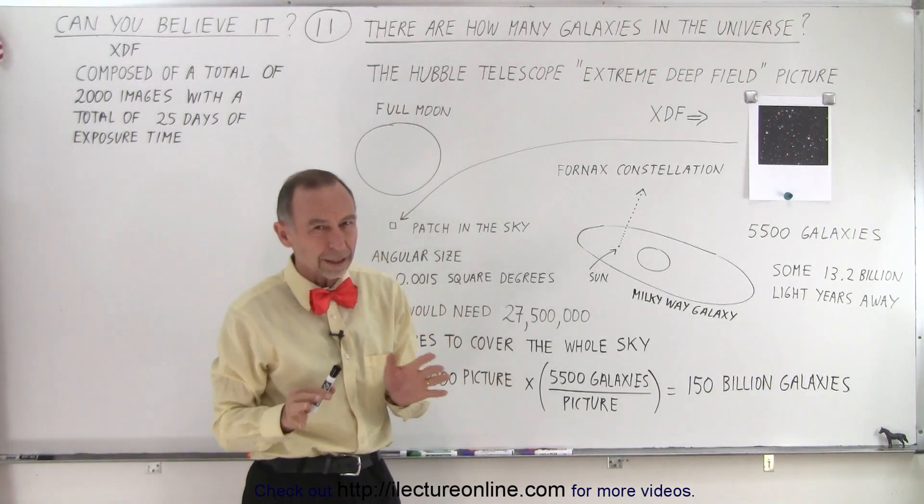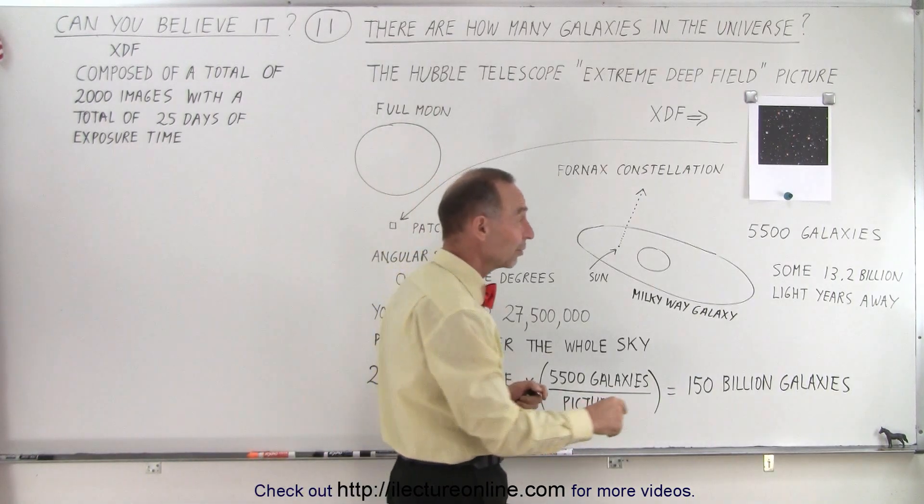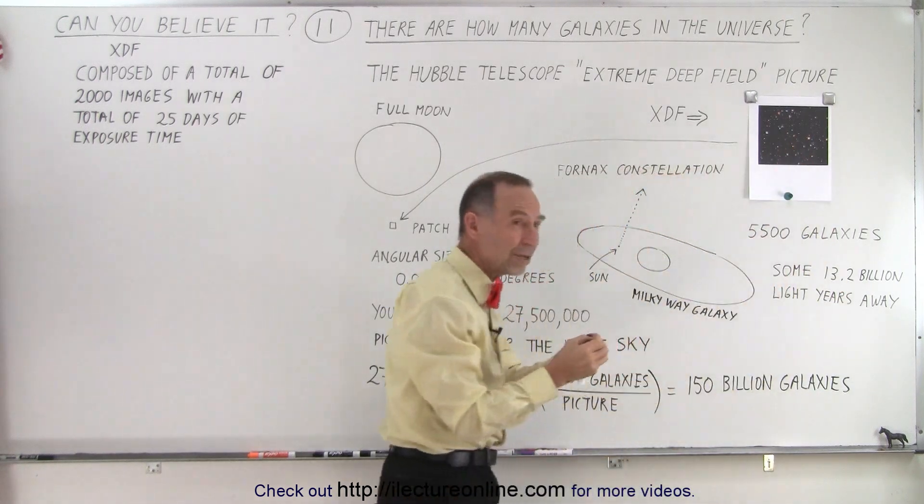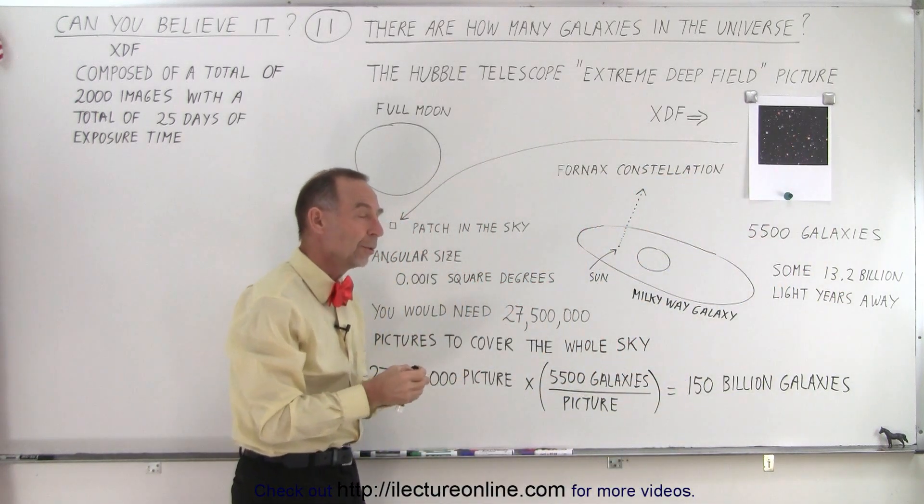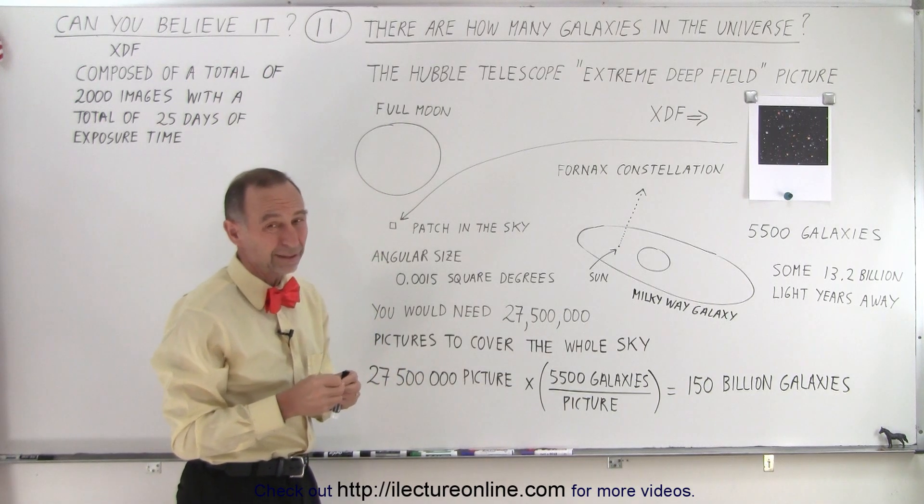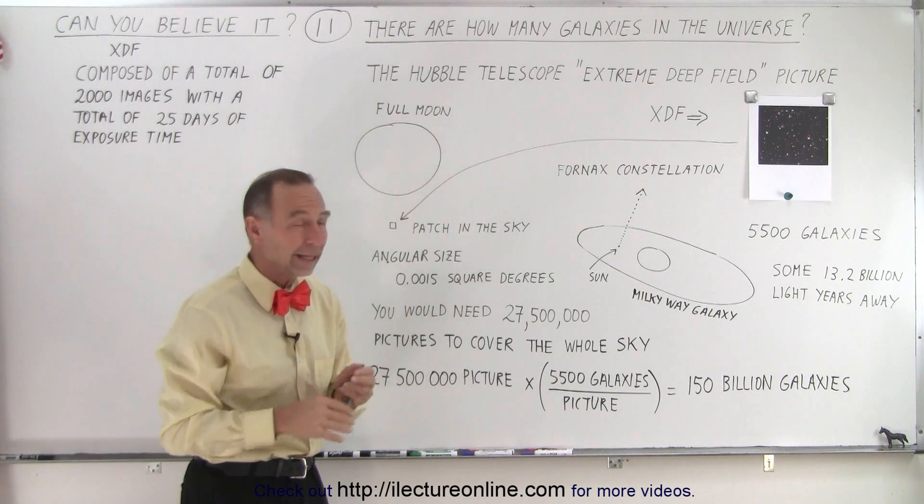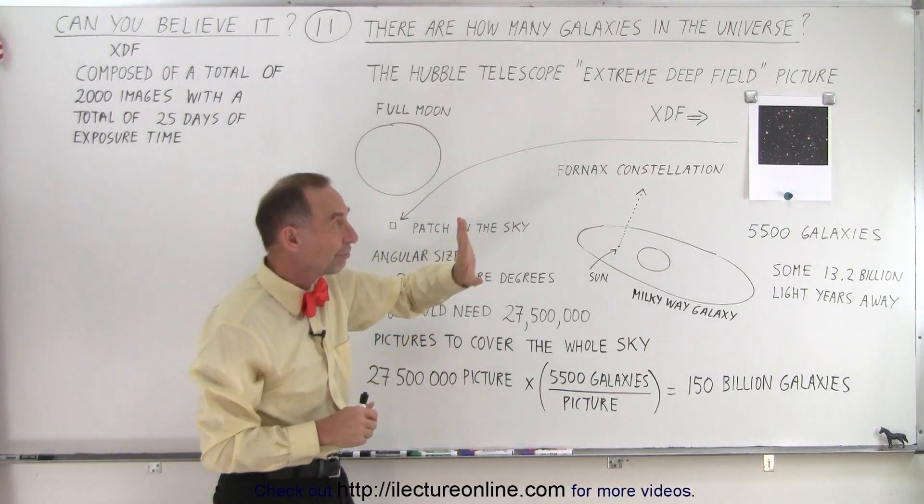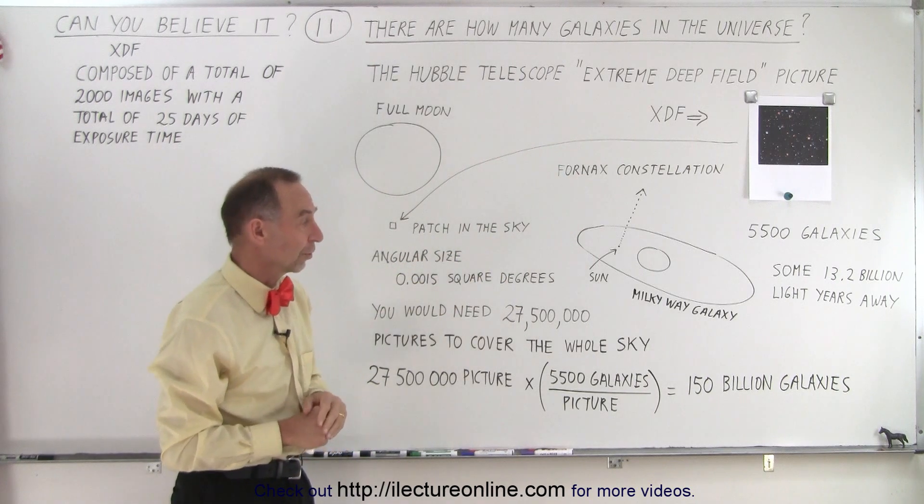The universe is approximately about 13.7 billion years old. And the farthest galaxies that we could see in the extreme deep field picture were about 13.2 billion light years away. So that goes to pretty close to the beginning of the universe, and so we're seeing some very old galaxies far away as well as some newer ones closer by.